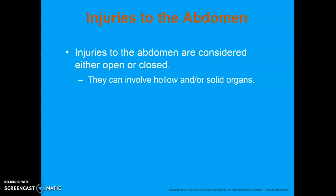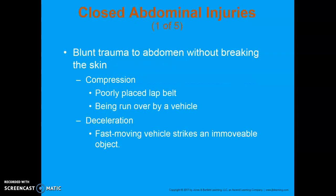Injuries can be open or closed, just like pretty much any other trauma, and can involve hollow and solid organs. Closed abdominal injuries tend to be from blunt trauma that doesn't break the skin. Mechanisms of injury can include hitting the steering wheel, hitting bicycle handlebars, falls, and blast injuries.